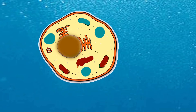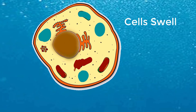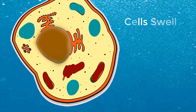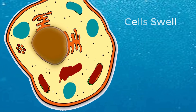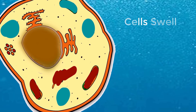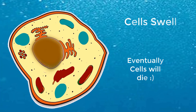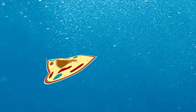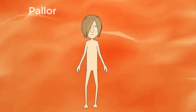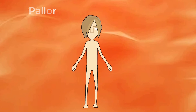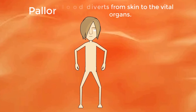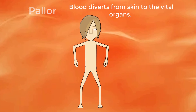It decreases tissue perfusion and causes ischemia. In response to hypoxemia, cells swell because of ion pump dysfunction. Cell membranes become hydrolyzed with the release of lysosomal enzymes and cells begin to die. Pallor is a common finding and occurs when blood is diverted from the skin to the vital organs during vasoconstriction.